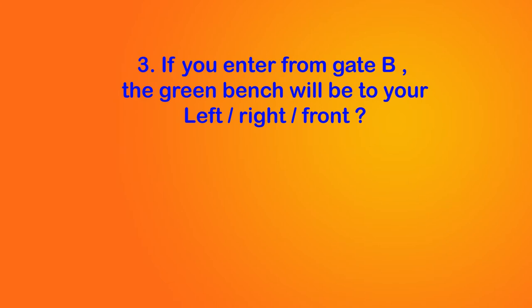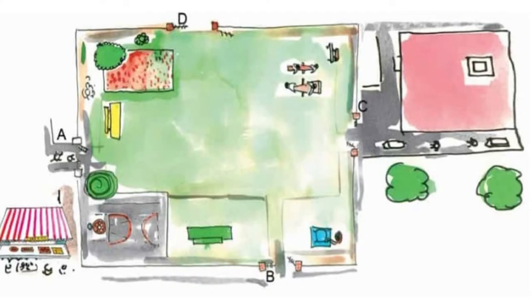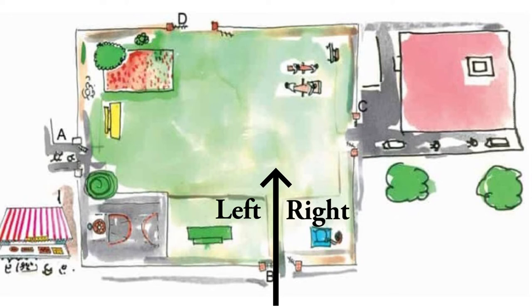Now let's move to question 3. If you enter from gate B, will the green bench be to your left or right or front? Children, if we enter from gate B, this will be our left and this will be our right. We observe that the green bench will be to our left.